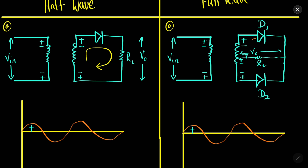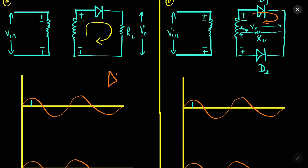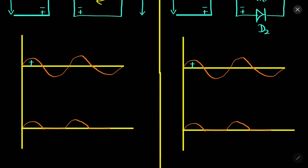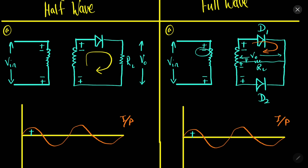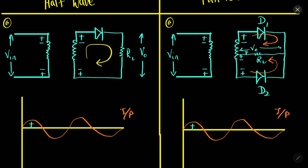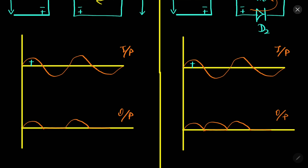Because of that, current flows through the upper diode D1 in the positive cycle. Now in the negative cycle, the upper terminal becomes negative and the lower terminal becomes positive, so the lower diode D2 becomes forward biased and the upper diode D1 becomes reverse biased. The lower diode conducts current but the upper diode does not. The direction of current through the load is the same in both cycles — the current is in the same direction in both the positive and negative cycles.